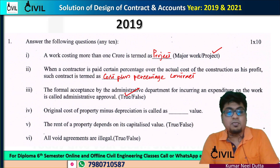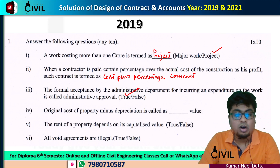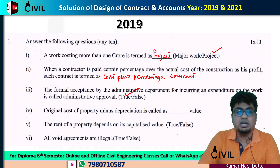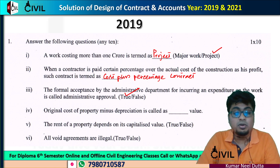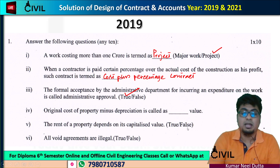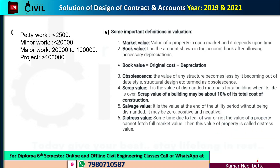Next, the original cost of the property minus depreciation is called — so the property is the original cost of the property. What do you think about this type of contract? Here you will think about the value of the property. Go to the details of the important information. The book value is the original cost minus depreciation.